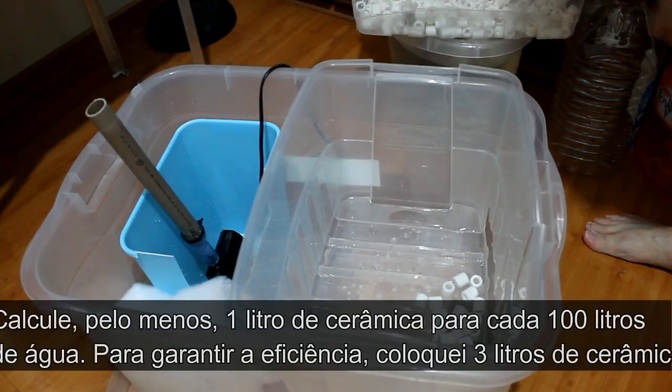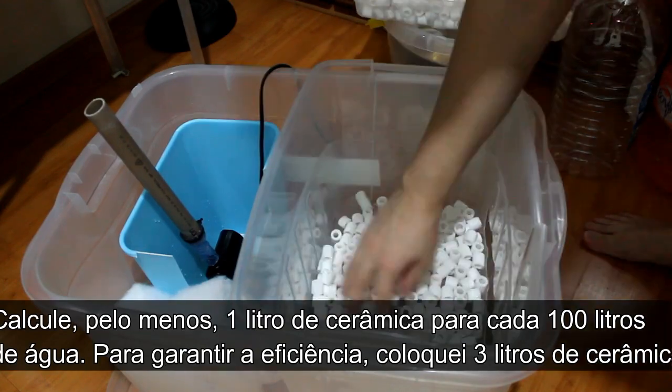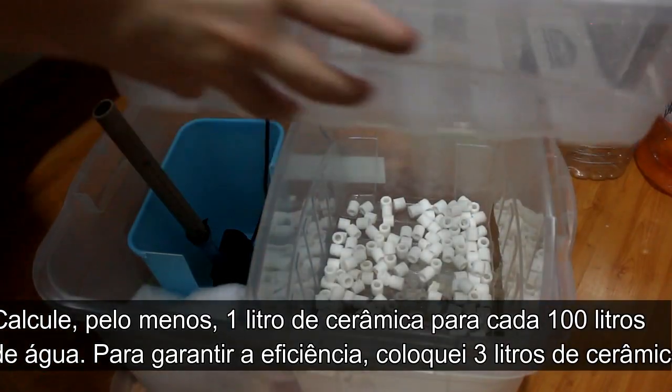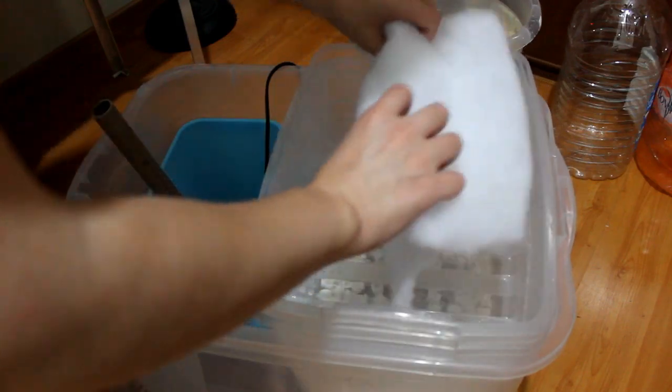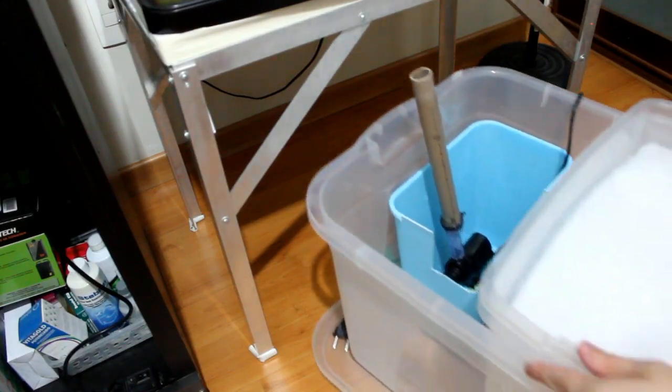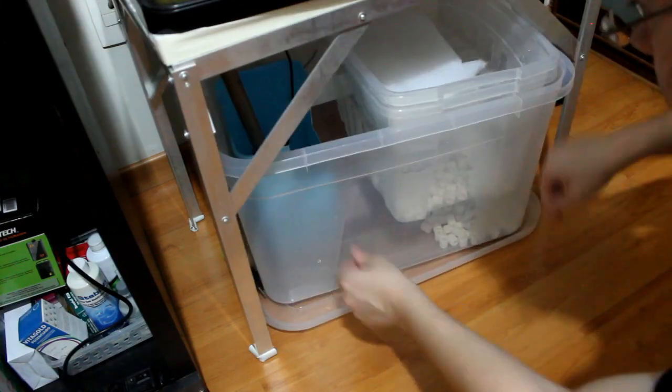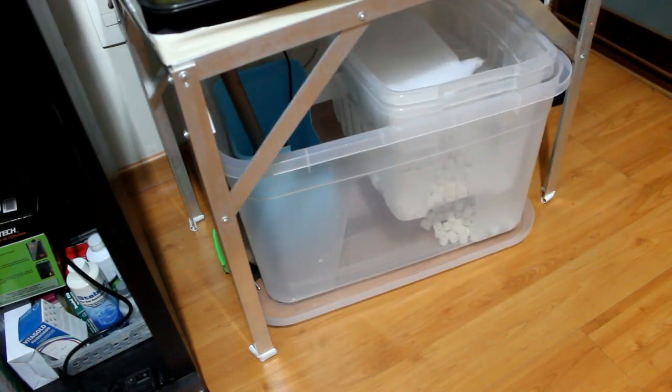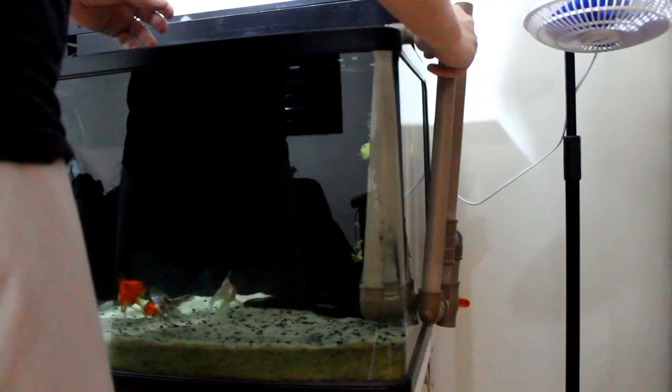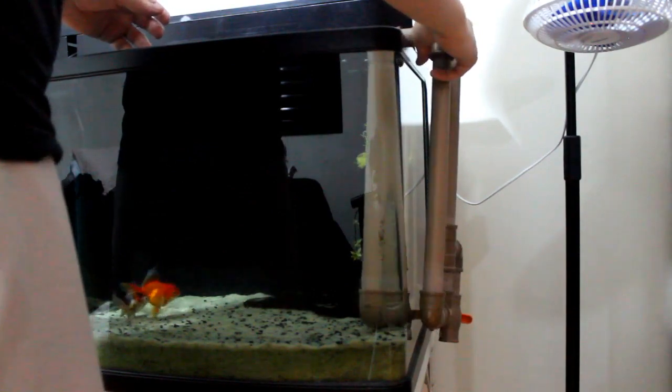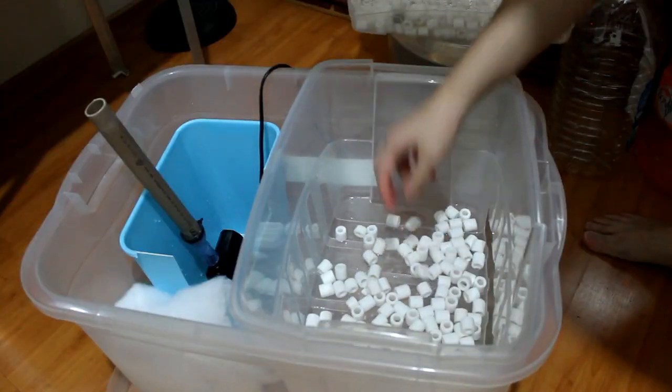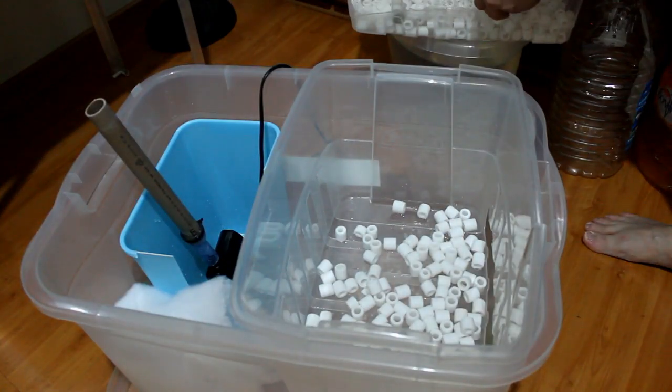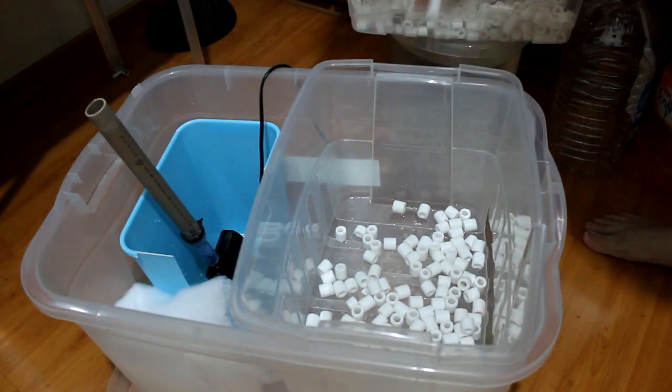Agora vamos para a última parte, conectar o Samp em nosso aquário. Tendo o overflow e o Samp montados, precisamos conectar um ao outro. Para isso, coloquem o Samp e o overflow no lugar onde eles ficarão na casa de vocês. Não coloquei minhas cerâmicas em uma redinha, mas recomendo que coloquem para facilitar na limpeza delas futuramente. Além disso, também não coloquei carvão ativado nem purigem, pois irei colocar mais para frente.